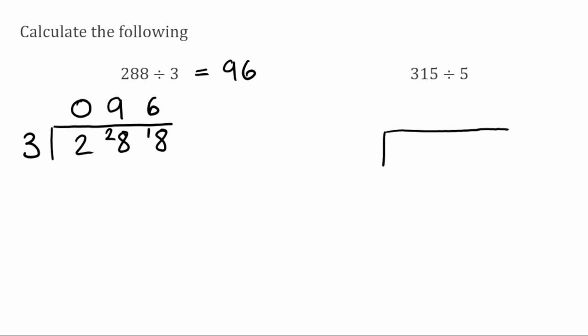Using the same method for this next question we've got 315 divided by 5. To begin with, 5 doesn't fit into 3, so we carry that 3 over onto the next digit — we don't need to write a leading zero. So now we've got 31. 5 fits into 31 six times because 6 times 5 is 30, leaving a remainder of 1. Carrying that over, 5 fits into 15 exactly 3 times. So our answer to 315 divided by 5 is 63.